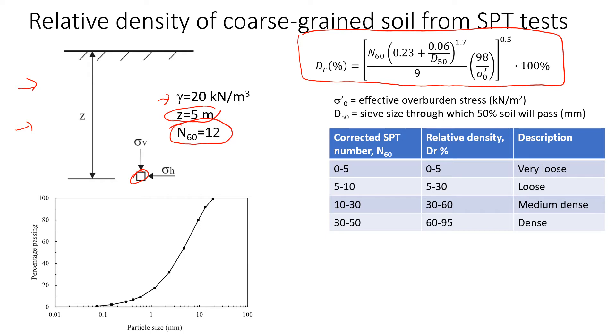Now let's see how we use this equation and how we're going to find this relative density. We'll see that here we need to know the effective vertical stress, and we also need to know this D50. So D50 is the sieve size that passes through 50% on the curve, and we have the curve here. So now let's find this D50.